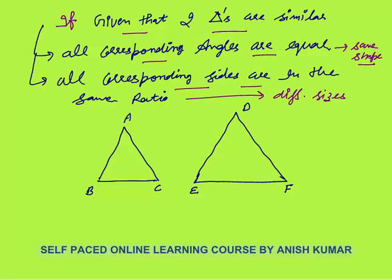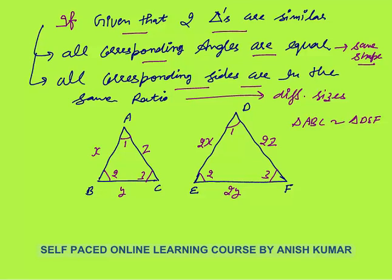That fulfills our criteria that two objects are similar when they have the same shape but different sizes. So if triangle ABC is similar to triangle DEF, then all corresponding angles are equal — angle 1 equals angle 1, angle 2 equals angle 2, angle 3 equals angle 3 — as well as the corresponding sides are in the same ratio. If I take sides X, Y, Z with a ratio of 1 to 2, then the corresponding sides will be 2X, 2Y, and 2Z. All corresponding sides are in the same ratio of 1 to 2, and all corresponding angles are equal, so these two triangles are similar.